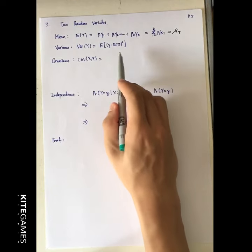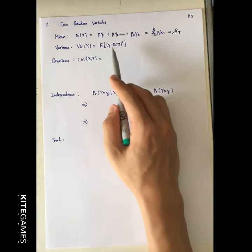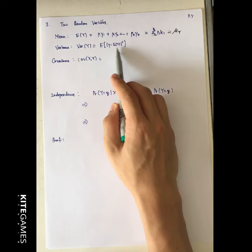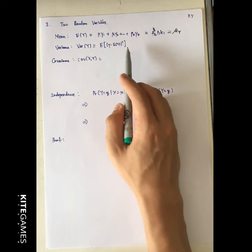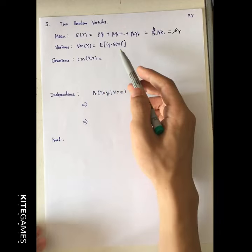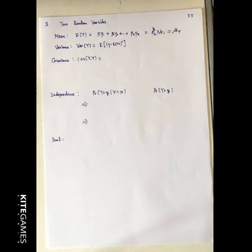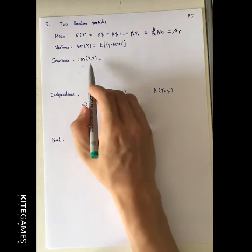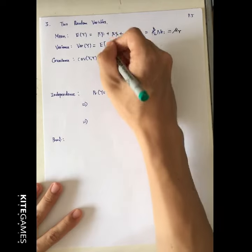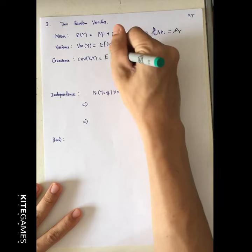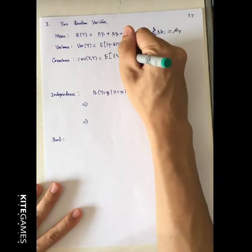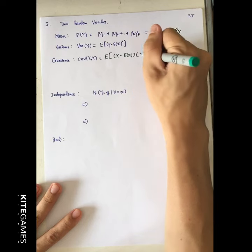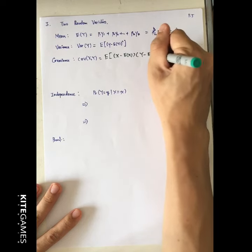We have also covered the concept of variance. The variance has the form: expected value of (y minus mu_y) squared. Before we go to two-variable cases, we need to learn one more concept called covariance. The covariance of x and y can be calculated as the expected value of (x minus mu_x) times (y minus mu_y).